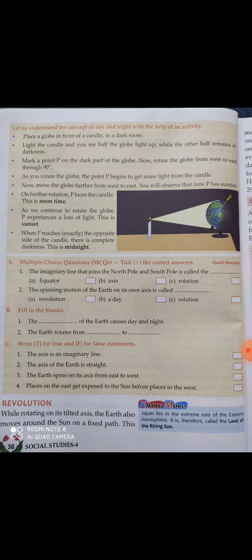This is an activity that you can do at home as well. From this activity, we can learn how the earth gets sunshine from the sun, and how night occurs — that also we come to know. The multiple choice questions, fill in the blanks, and true or false — you can do those on your own, but at the end of the chapter I will definitely share the PDF with you.